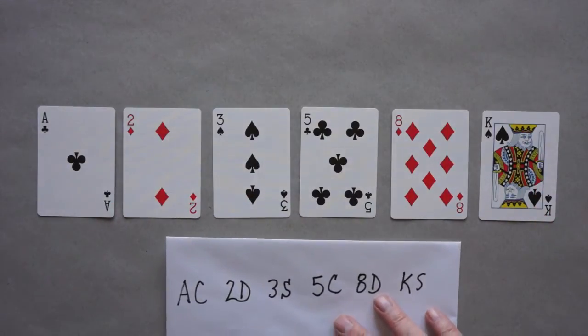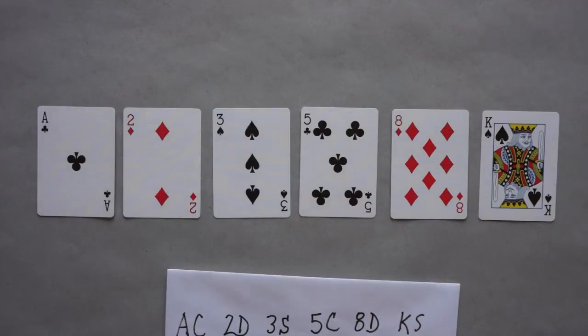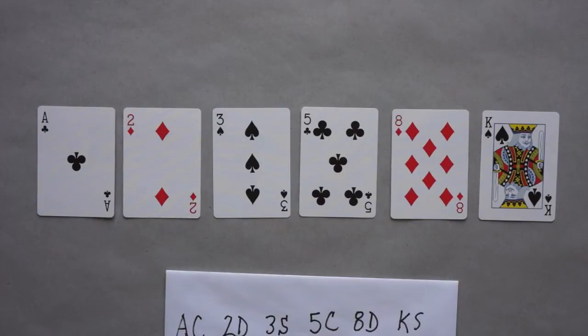So I have a little cheat sheet here because I have a terrible memory, and I would hide that under the table. But if you can memorize them, it would be great. So again, Ace of Clubs, 2 of Diamonds, 3 of Spades, 5 of Clubs, 8 of Diamonds, and King of Spades. So we'll keep that cheat sheet down here, but only we get to see it. So here's how we do the trick.